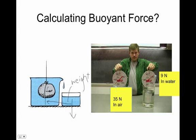We know a rock sinks, so this buoyant force would be less than the force of gravity pulling down. Here's another way to find how much a liquid is pushing up on an object: take the weight of a rock in air — let's say 35 newtons — then submerge it into the liquid. The force meter goes down to 9 newtons, which means the water is helping hold it up. The difference, 35 minus 9, gives us the buoyant force of the water on the rock: 26 newtons.